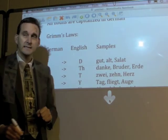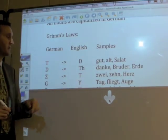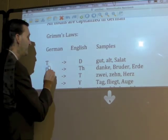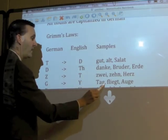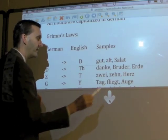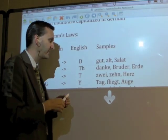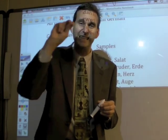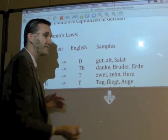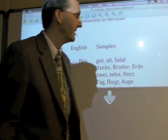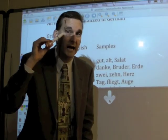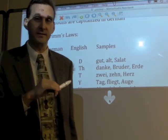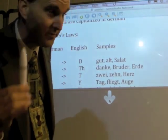The German G becomes an English Y. Like 'Tag' — G-U-T-E-N T-A-G — that actually has two changes: the T becomes a D and the G becomes a Y, so you have the word 'day'. Or 'Fliege' — which is a fly — the G becomes a Y, 'Fly'. And 'Auge' — A-U-G-E — the G becomes a Y. It doesn't get you perfectly to the English word, but it gets you a lot closer.